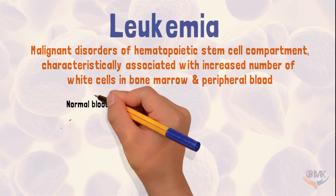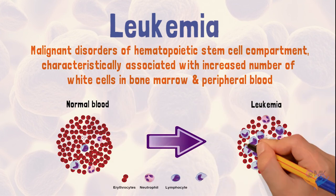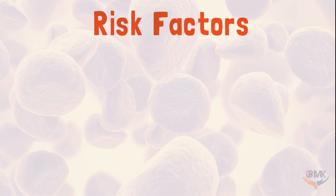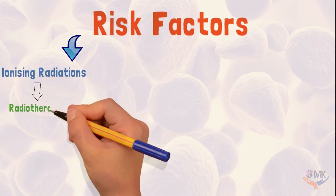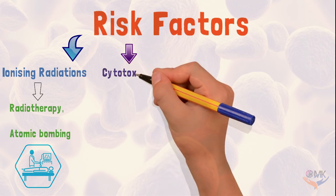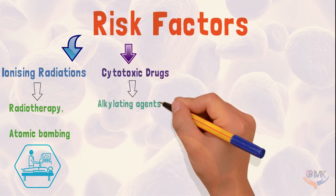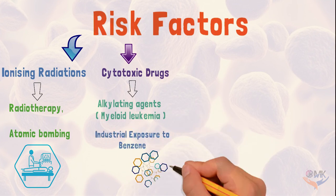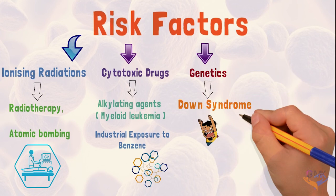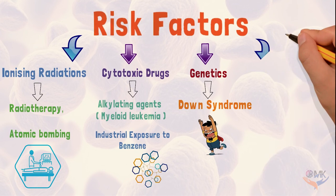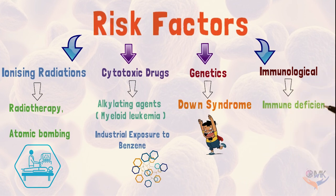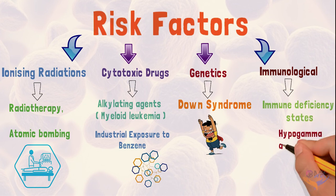Hematopoietic stem cells are the stem cells that give rise to other blood cells. The risk factors associated with Leukemia are ionizing radiations such as radiotherapy and atomic bombing, cytotoxic drugs that are alkylating agents, industrial exposure to benzene, genetics which include Down syndrome, and immunological factors which include diseases that make the patient immunocompromised, for example, hypogammaglobulinemia.